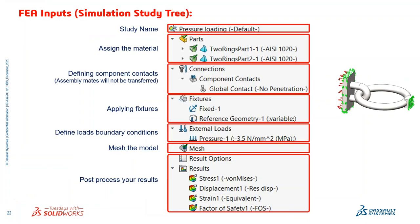From the SOLIDWORKS simulation study tree, a person who simulates will always look at this. First define your study, assign materials, then check what are the component connections in case of an assembly — what are the contacts and how components are connected. Then apply fixtures and make sure boundary conditions are applied. After meshing the model, you process your results.